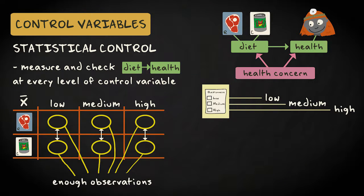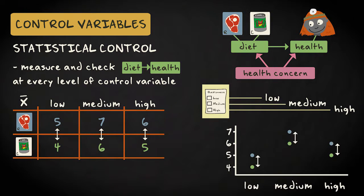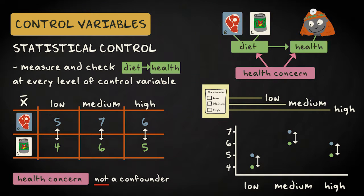Of course, this requires that we have enough observations in each three concern levels. If the raw meat group has a similarly higher mean health rating for all three health concern levels, then health concern does not provide an alternative explanation for the observed relation between diet and health.